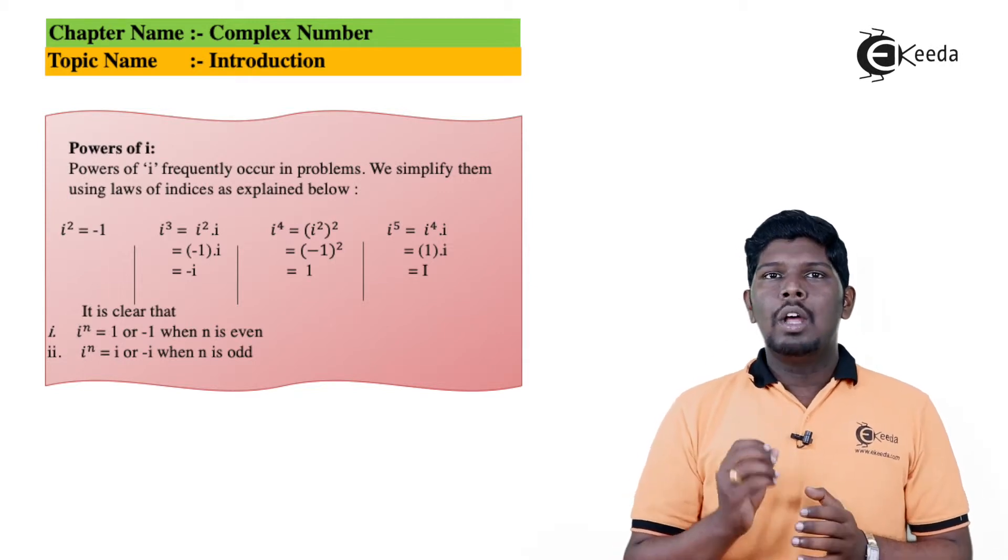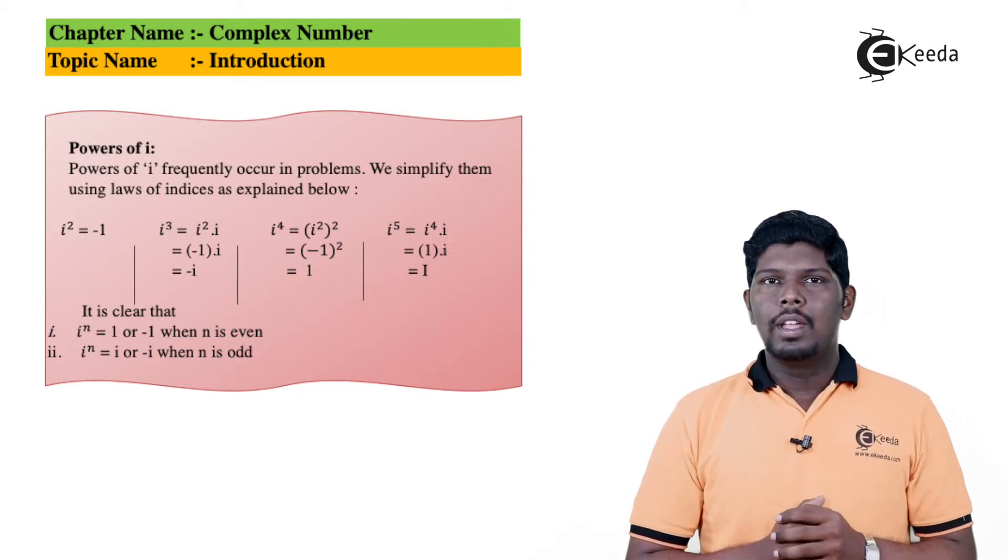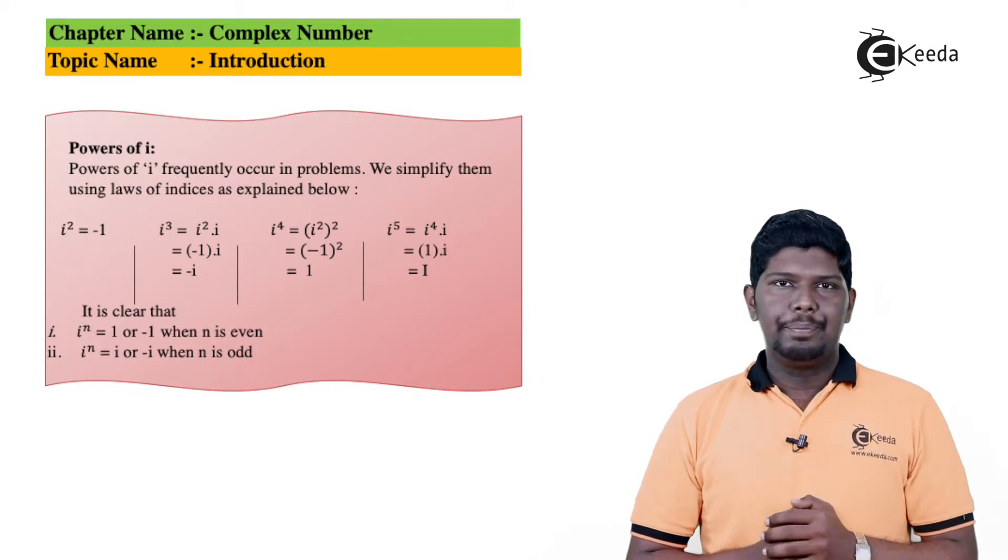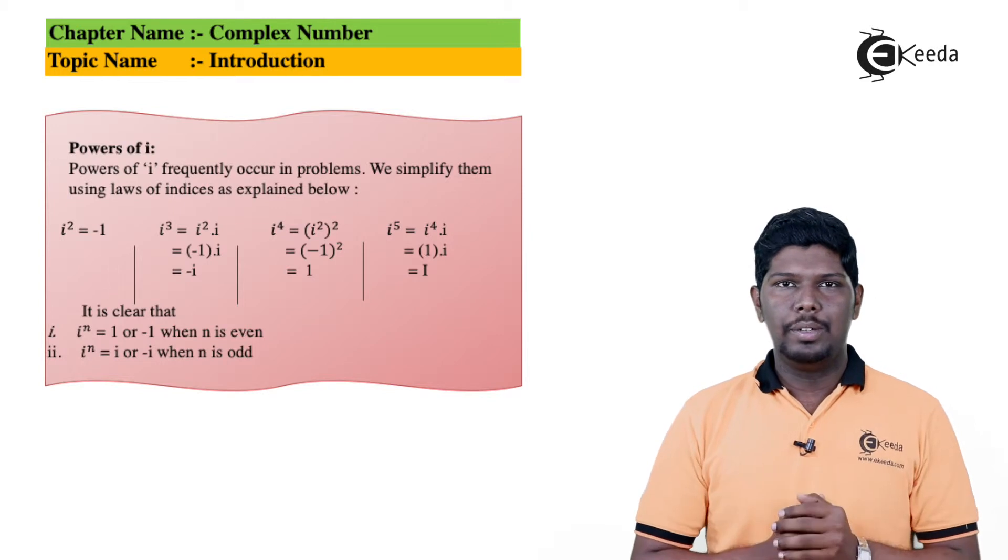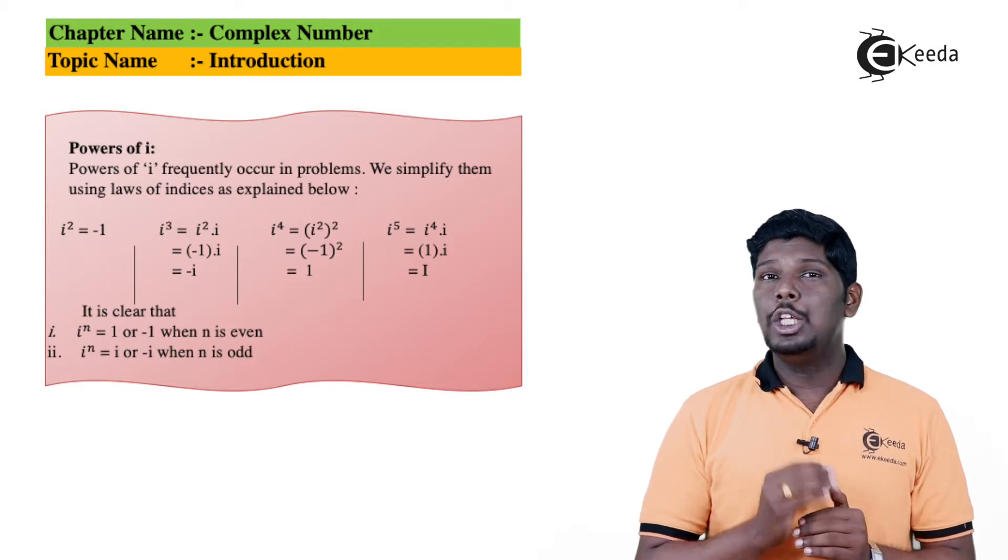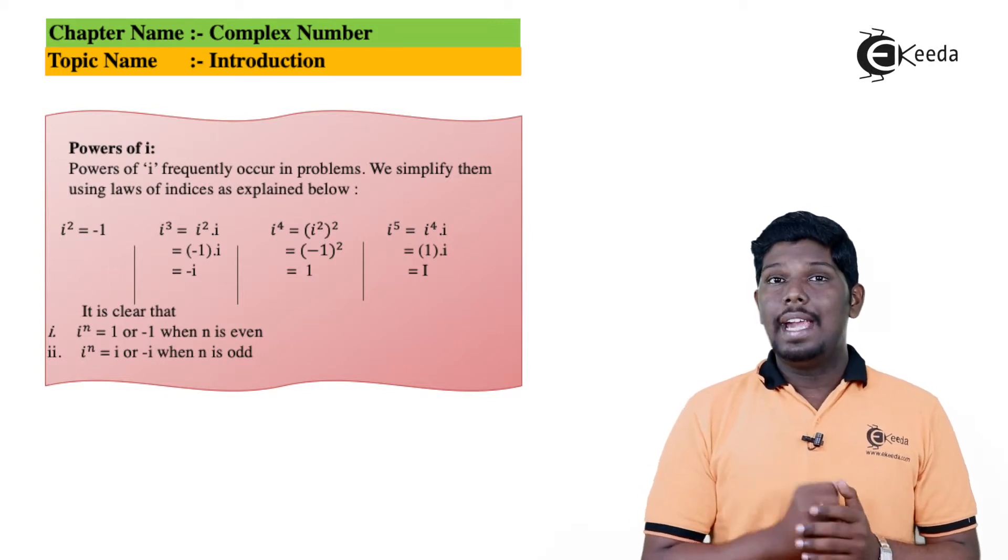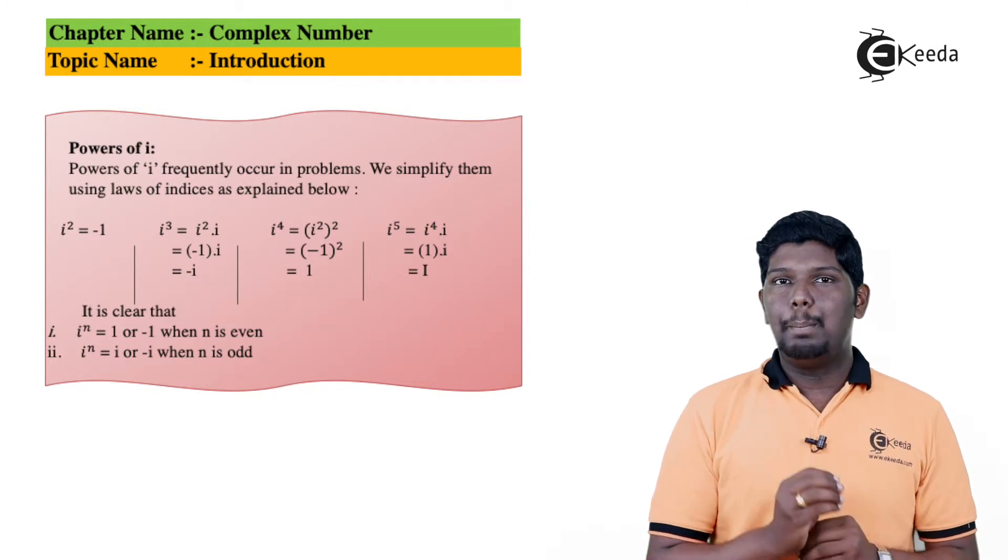What are the things that we should note down? Whenever we have iⁿ and n is even, our answer will be either 1 or -1. But whenever we have iⁿ where n is odd, the value will be either +i or -i.